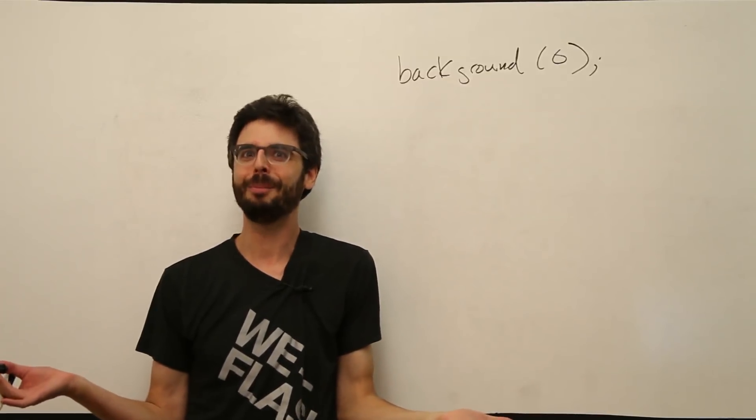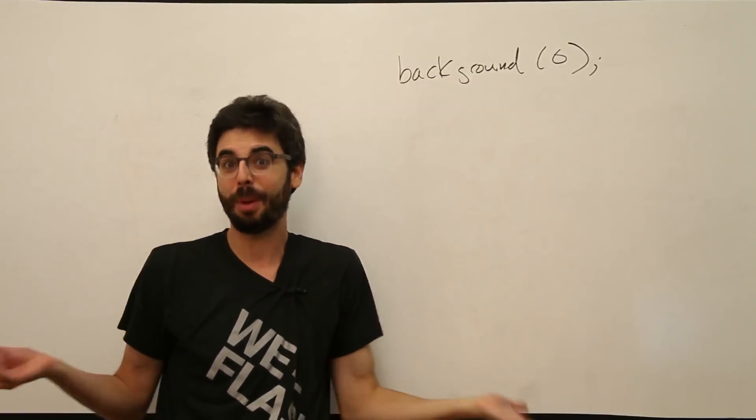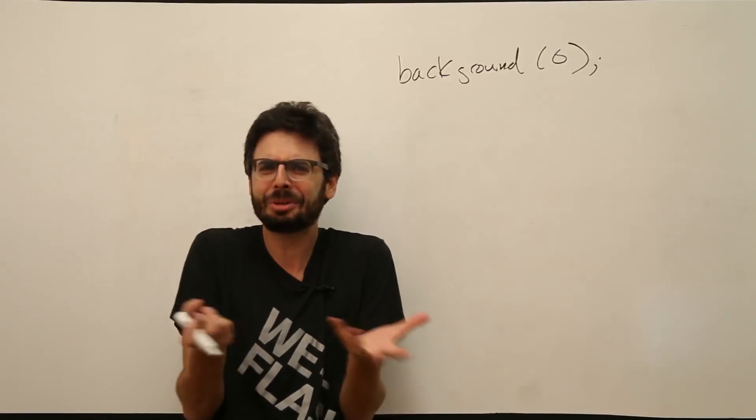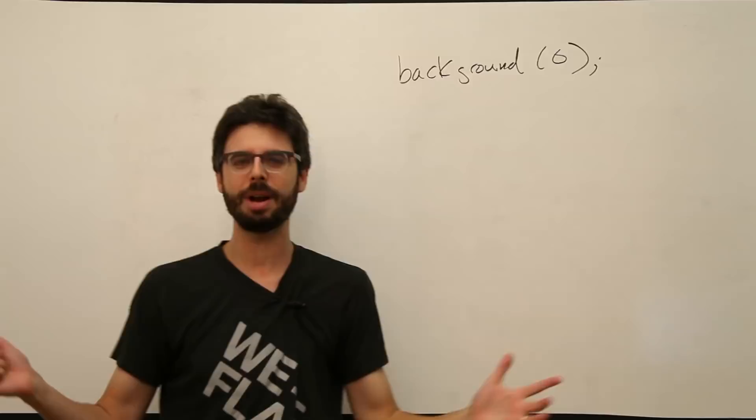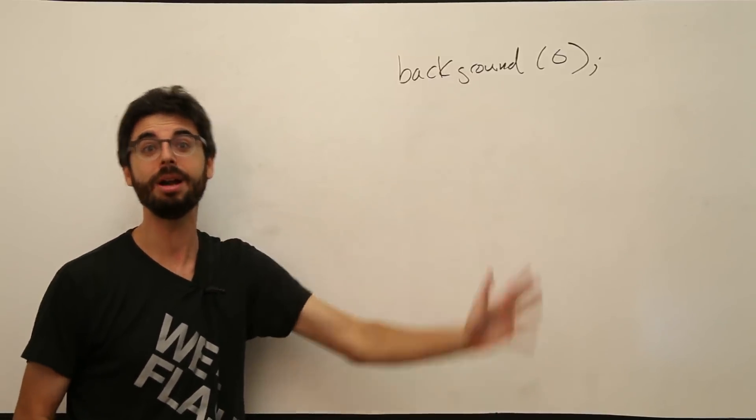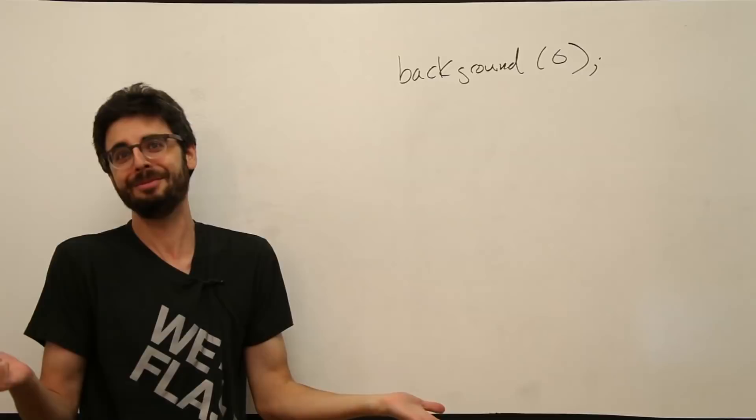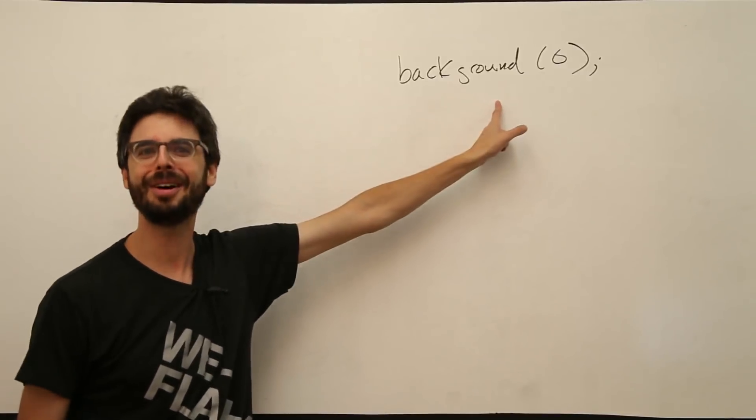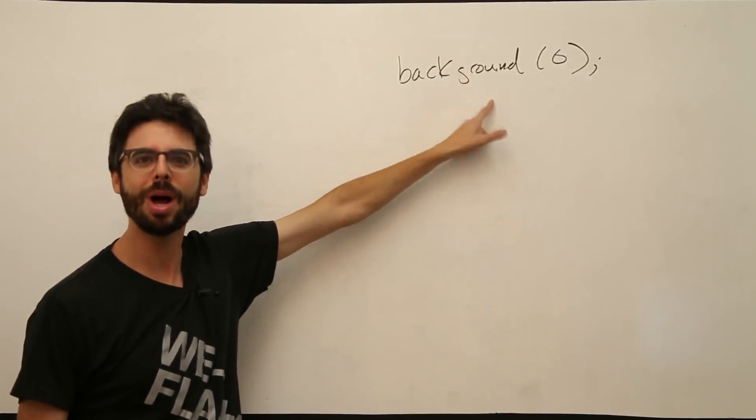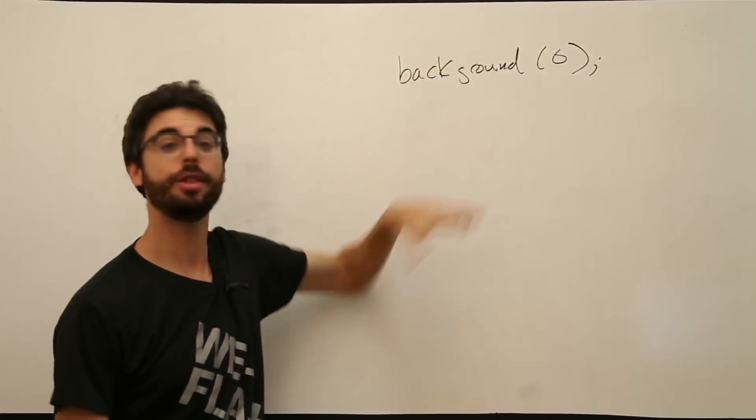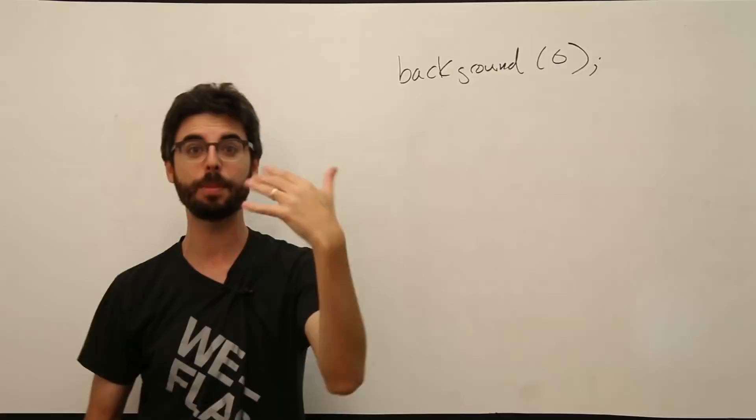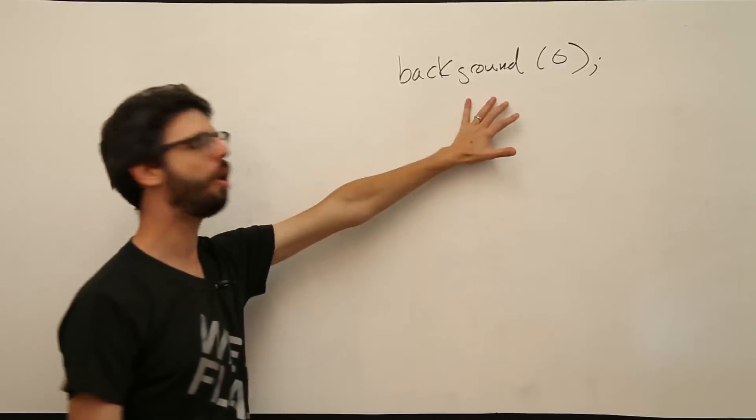Where does that function come from? Well, it comes from processing. But it doesn't just sort of exist by magic or just because you say background, you get a background. It exists because somebody, somewhere, perhaps, who goes by the name Ben Fry, defined this function. Somebody defined what it means, what code should be executed when you, the processing user, the programmer, the person writing your processing code, called the function background.